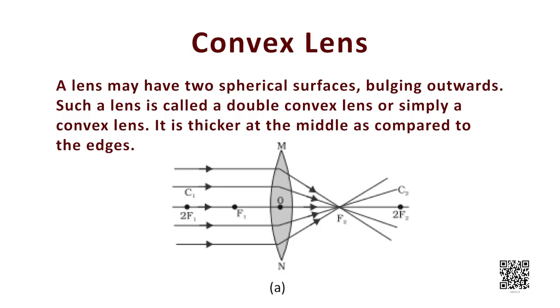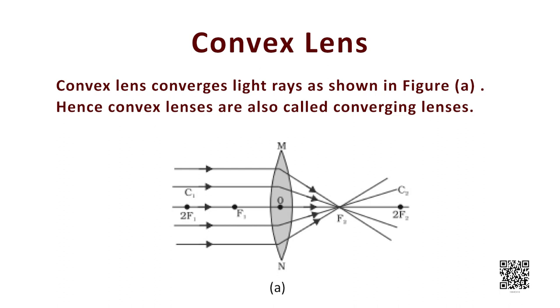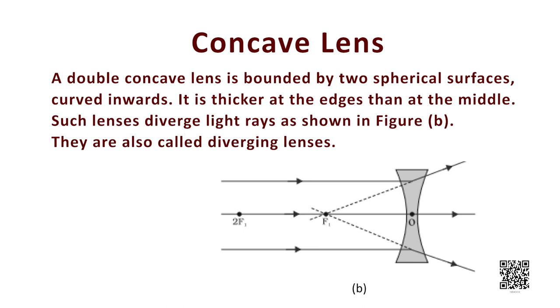A lens may have two spherical surfaces bulging outwards. Such a lens is called a double convex lens, or simply a convex lens. It is thicker at the middle as compared to the edges. Convex lenses converge light rays, so they are also called converging lenses. Similarly, a double concave lens is bounded by two spherical surfaces curved inwards. It is thicker at the edges than at the middle. Such lenses diverge light rays, so they are called diverging lenses. A double concave lens is simply referred to as a concave lens.